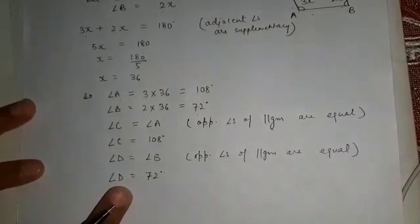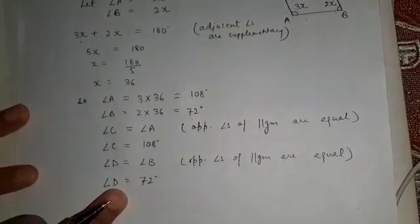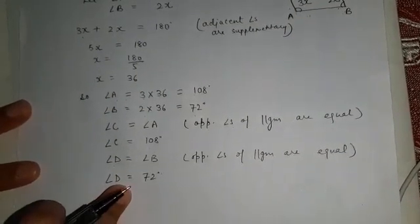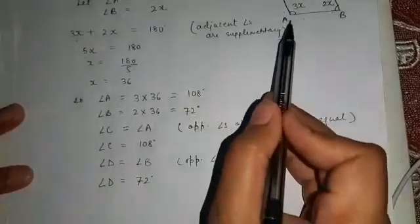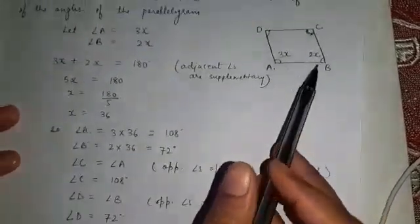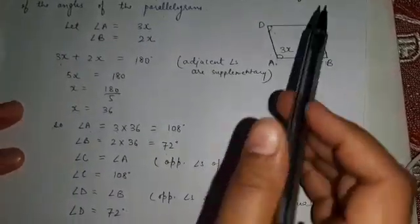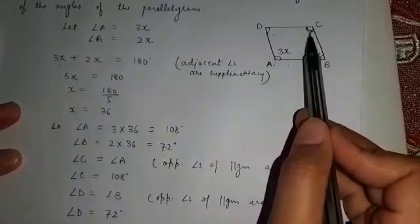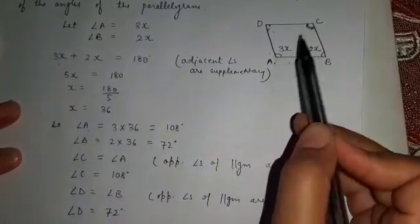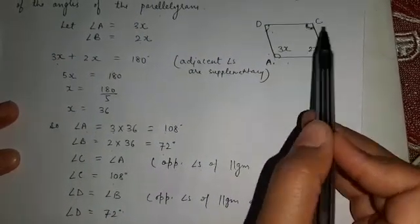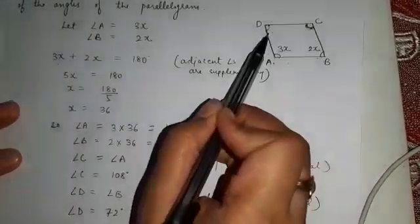So here we have given the values of all four angles of the parallelogram. Angle C is equal to angle A, which means 108 degrees. Angle D is equal to angle B, which means 72 degrees.